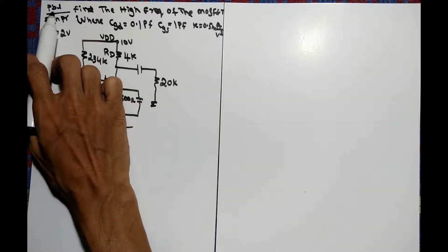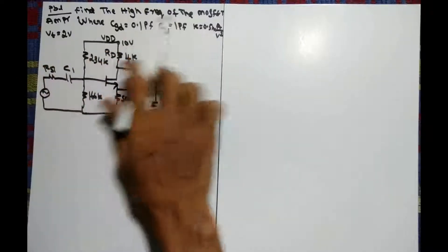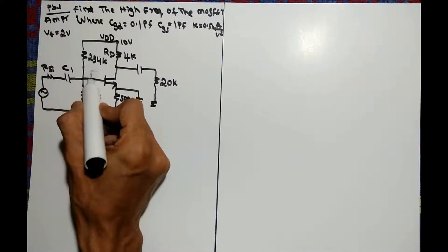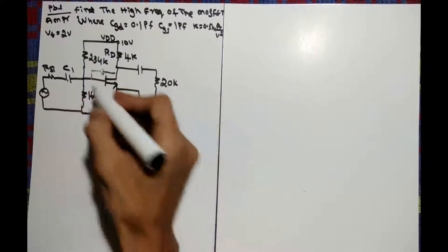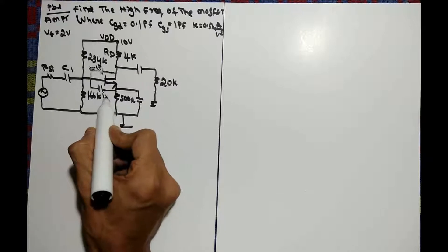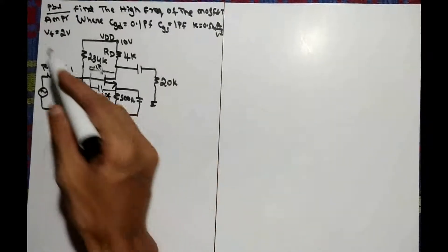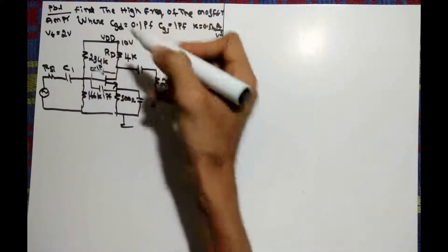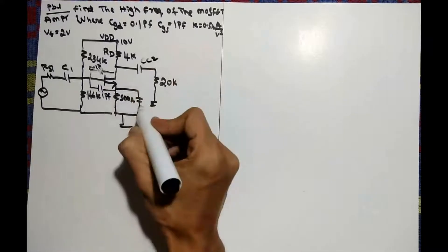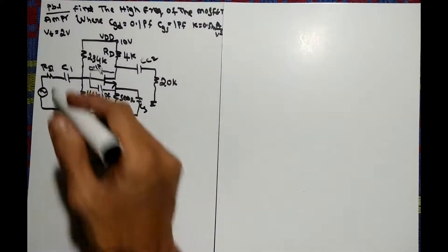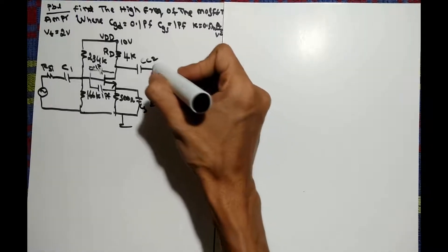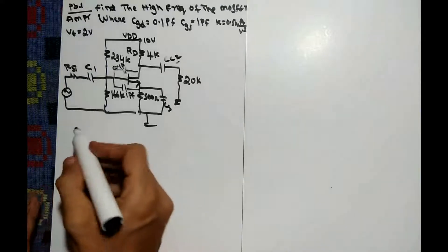Let's discuss the problem of high-frequency response of a MOSFET amplifier. Find the high frequency of the MOSFET amplifier where CGD is given as 0.1 picofarad (between gate and drain), CGS is 1 picofarad, VT is 2 volts, and VDD is 10 volts. This is a voltage divider bias circuit with coupling capacitors CC1, CC2 and bypass capacitor CS — since we are finding only high frequency, these coupling and bypass capacitors are not required at all.